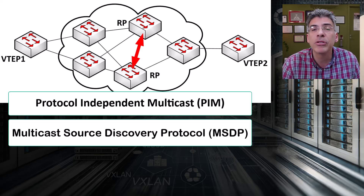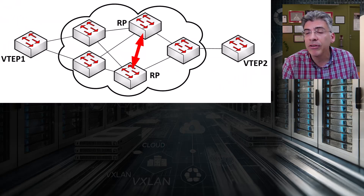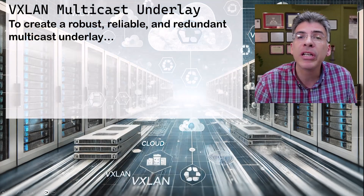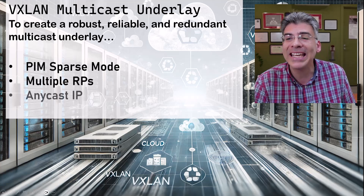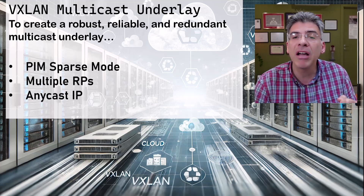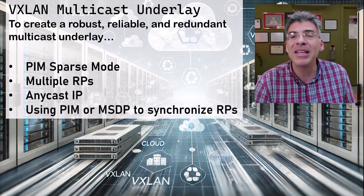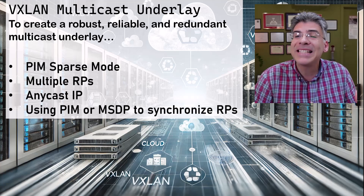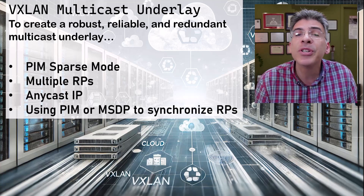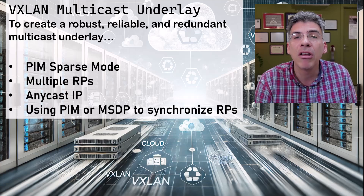Both of these are viable solutions for VXLAN. So if you're going to create a robust, reliable, and redundant multicast underlay for a VXLAN topology, the best solution is to deploy PIM sparse mode with multiple RPs using Anycast IPs in order to eliminate the single point of failure that one RP introduces. You can then use either PIM or MSDP to synchronize between those RPs. All of this can be done to minimize downtime in the event of a failure and to resolve the inconsistencies that can be introduced by the redundant uplinks on the VTEPs.